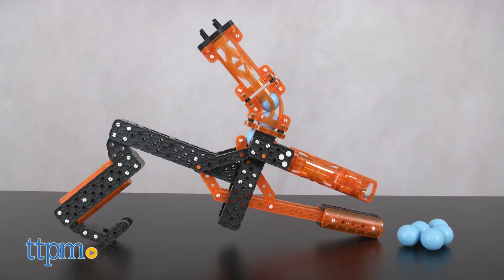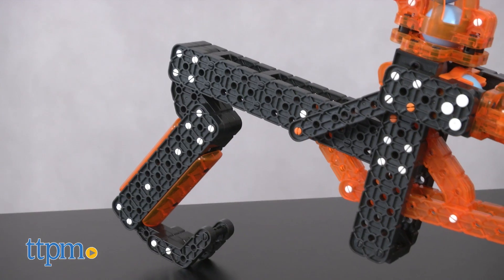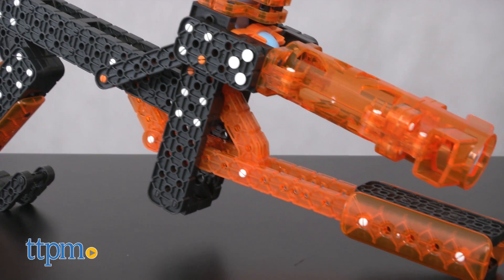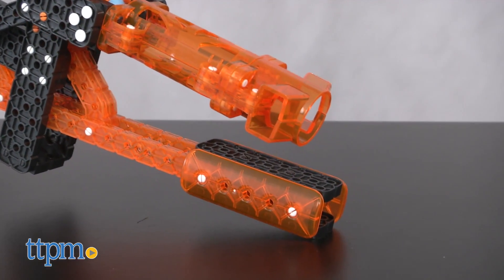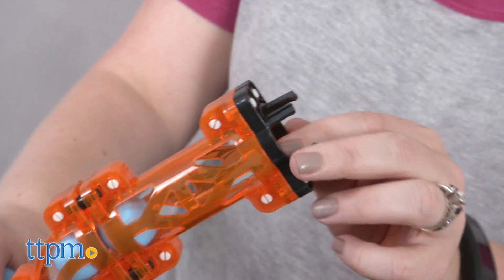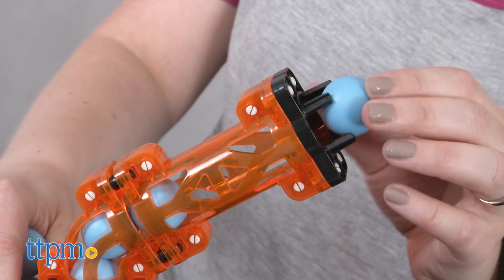This comes with more than 140 pieces that snap together to allow kids to build a cool orange and black blaster that can launch plastic blue balls more than 20 feet. It comes with 11 balls, but only 7 can be loaded into the see-through ball shoot at once.